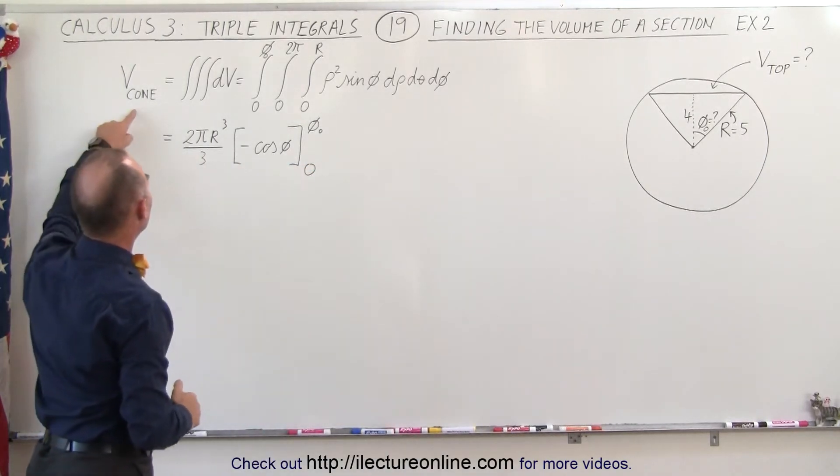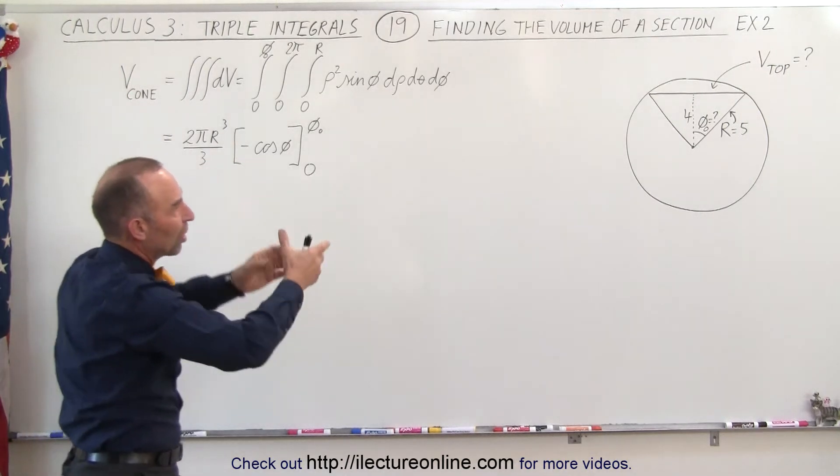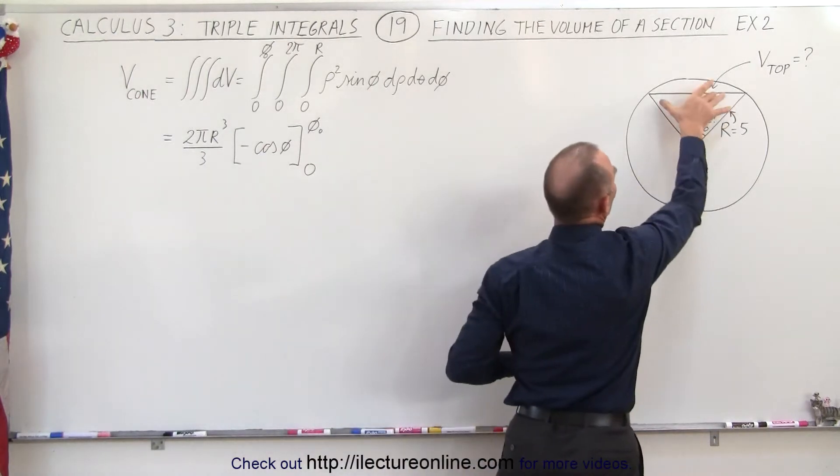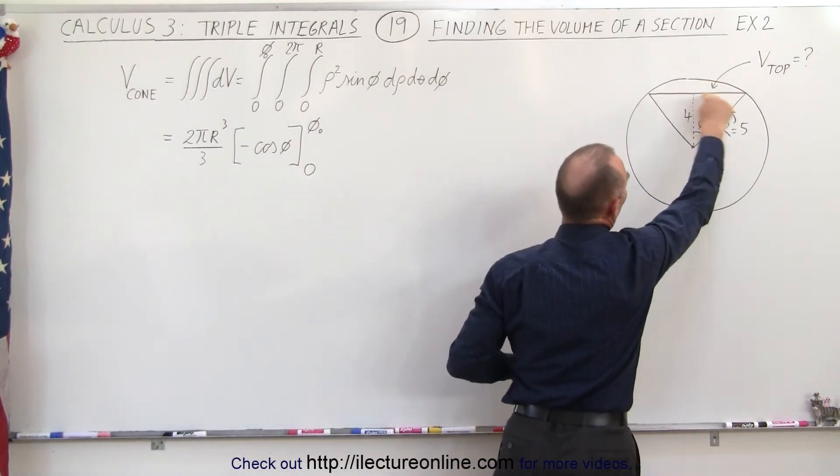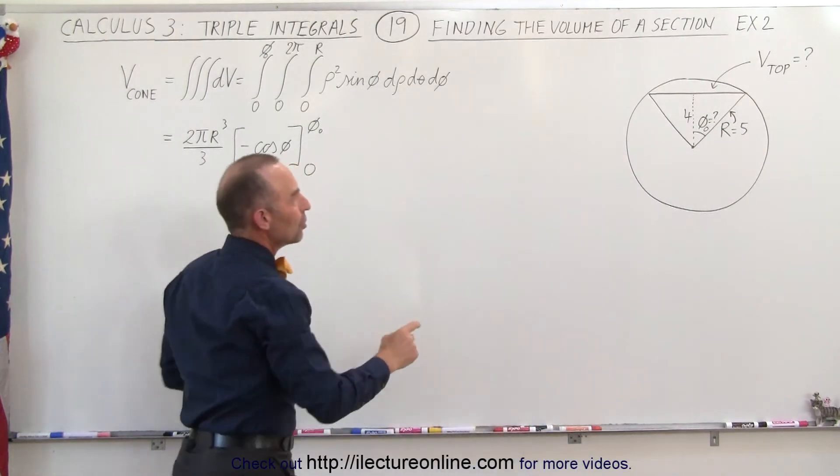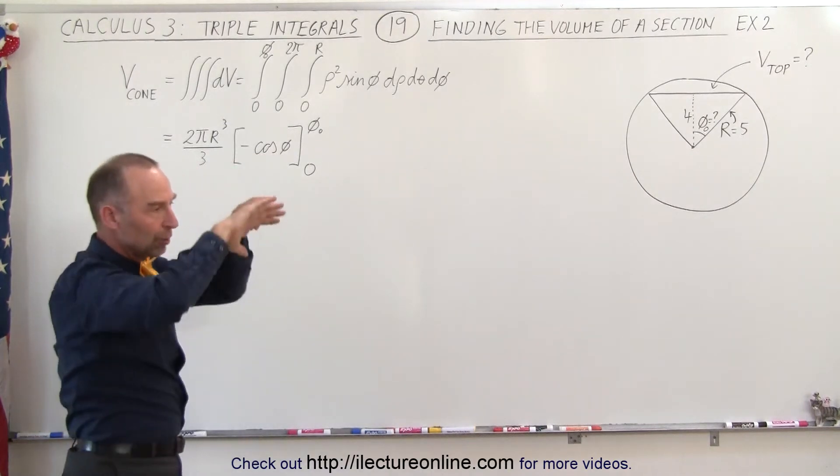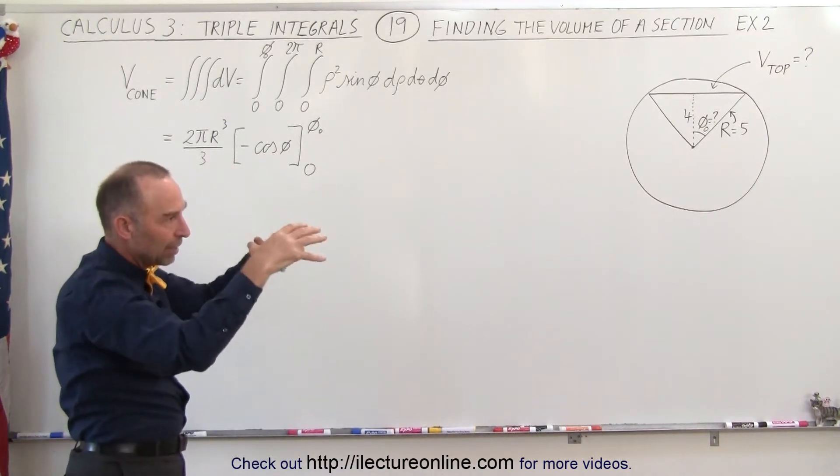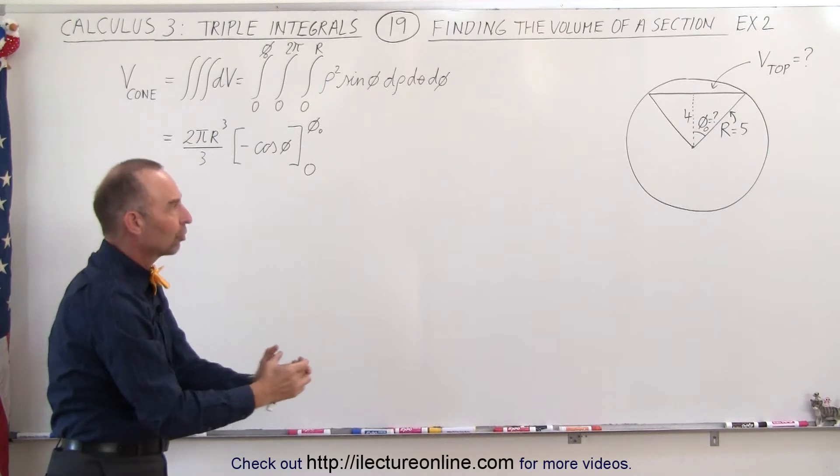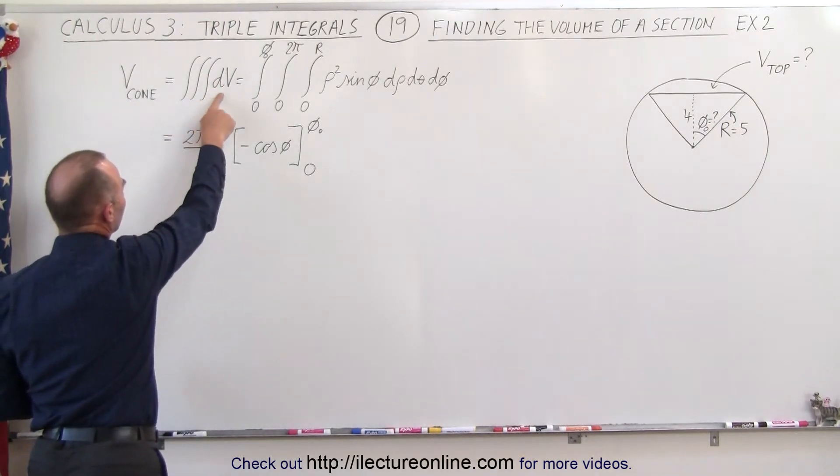So we've already figured out by now, after we've done a few of these examples, that the volume of a cone is equal—that would be the cone shape that includes the top portion and the bottom portion. This would be a right circular cone that's upside down. You add this volume and that volume together, you get kind of like an ice cream cone. You have a spherical portion at the top, and then you have the cone portion at the bottom, and so the volume of the total cone is equal to the triple integral of dv.